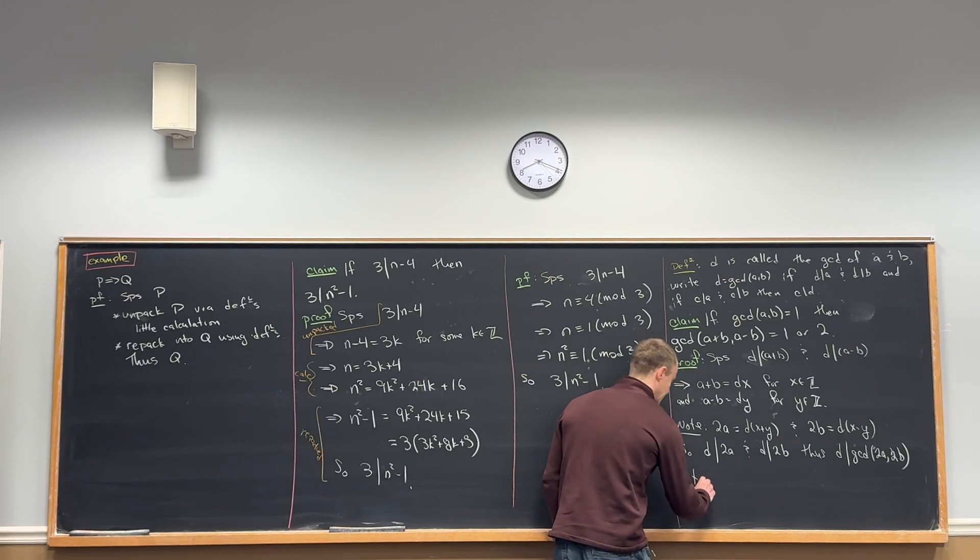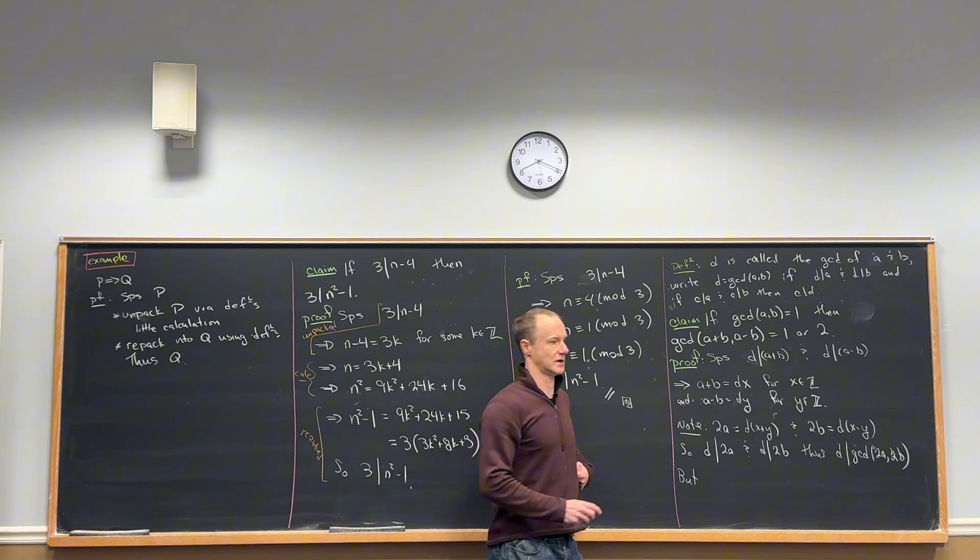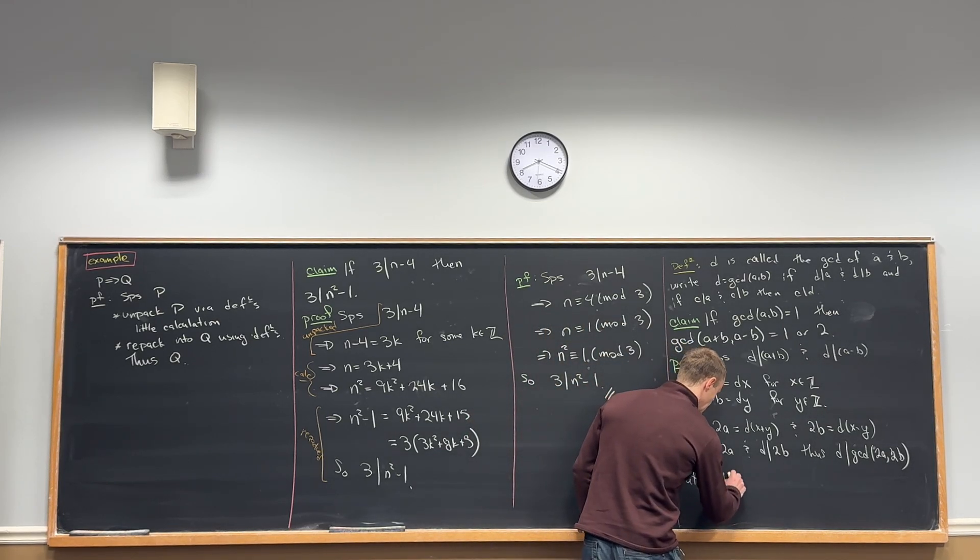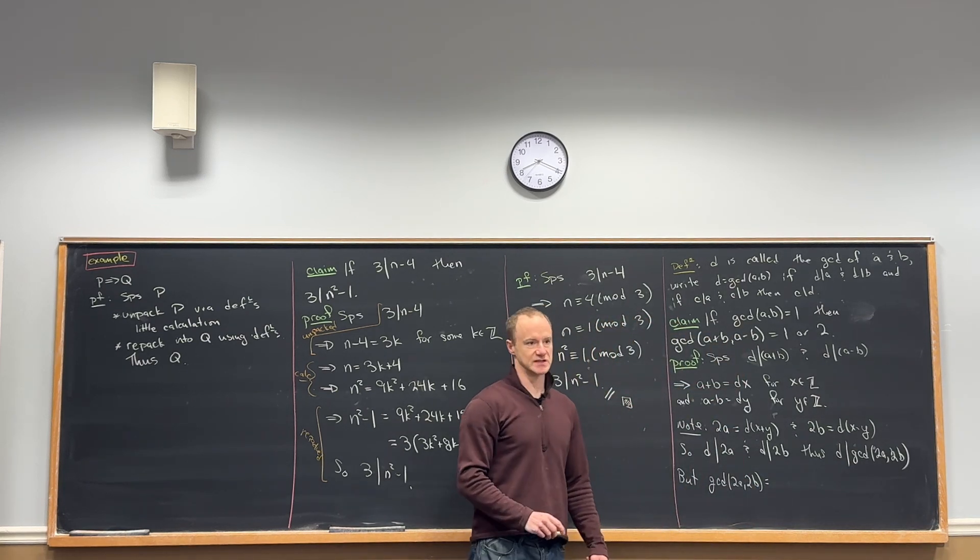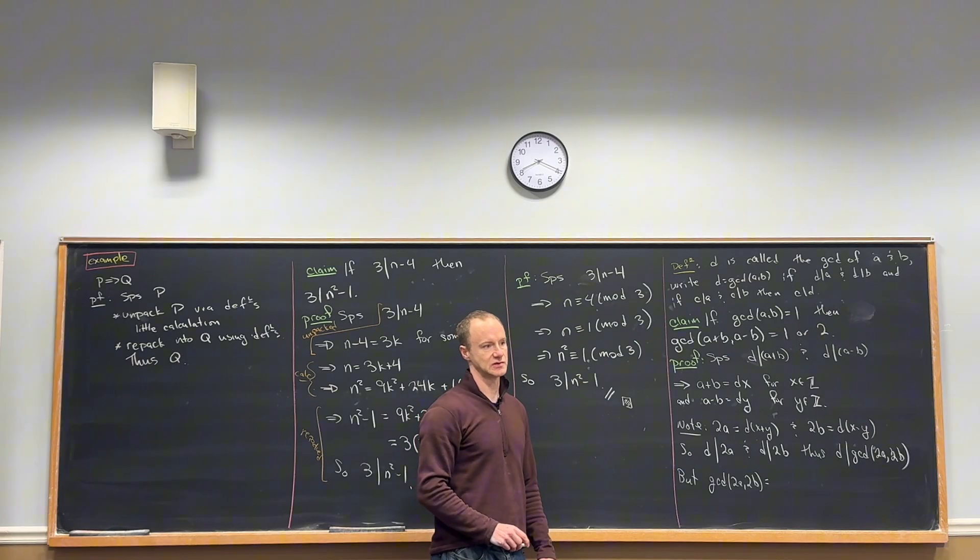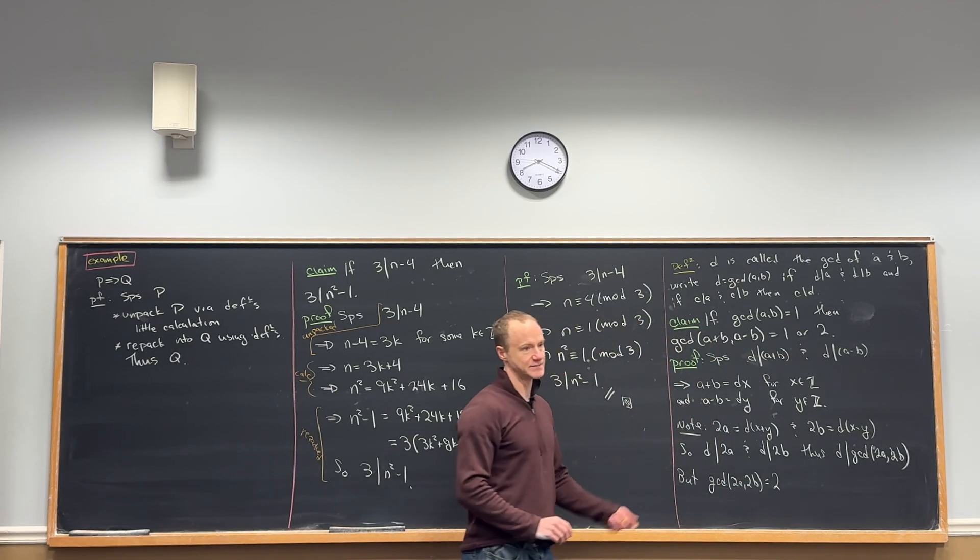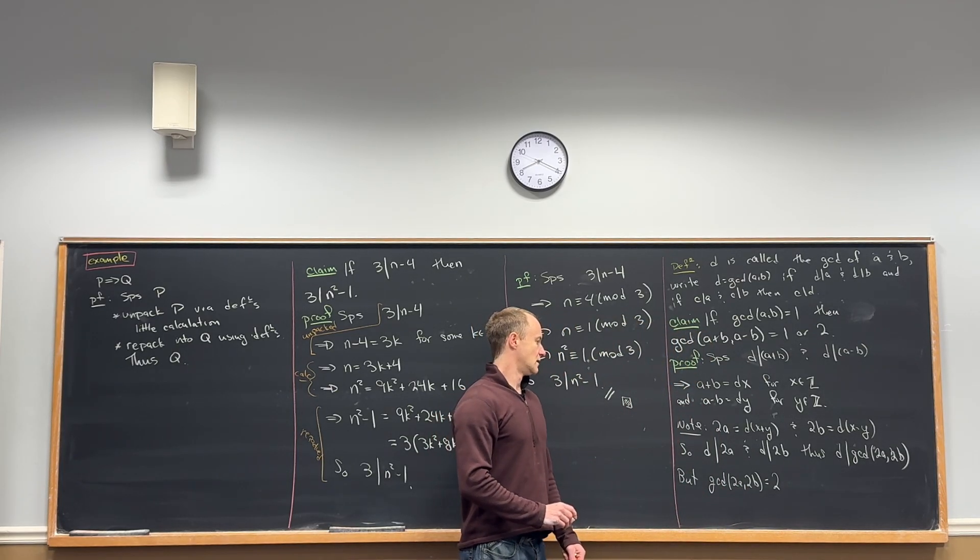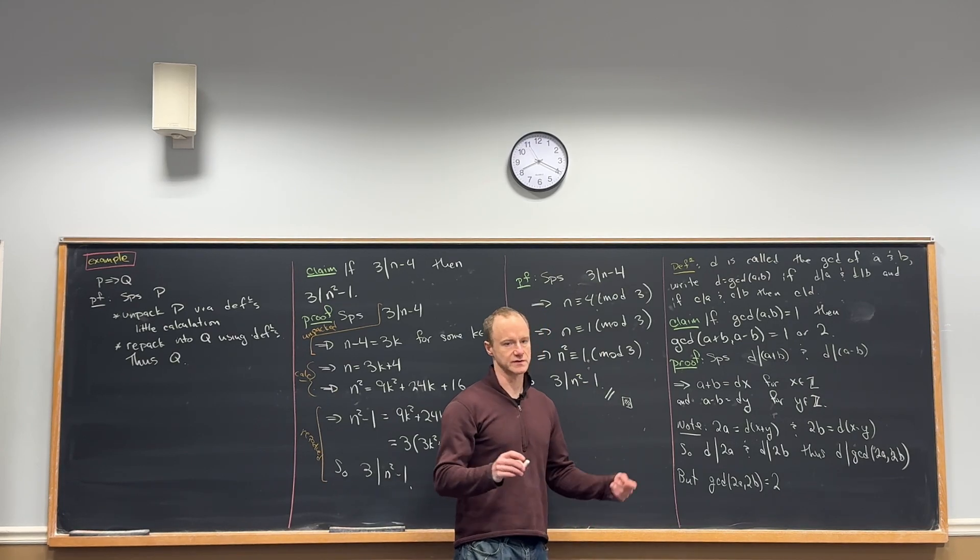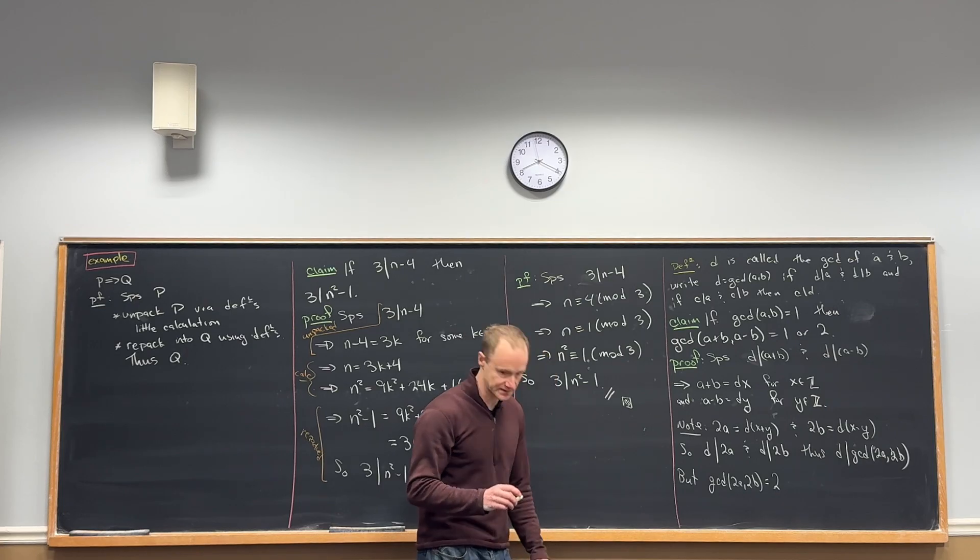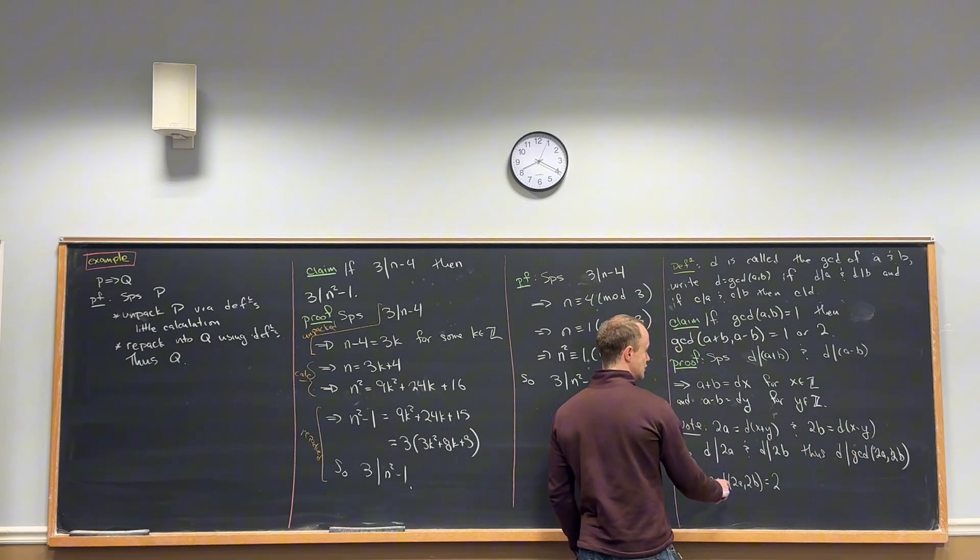I think maybe this could be a little exercise, but let's just take it for truth right now. But tell me what the GCD of 2A and 2B is, if the GCD of A and B is 1. What do we think the GCD of those are? Yeah, 2. Well, 2 divides both of them. But then you can divide 2 from both sides of the equation or whatever, and you'll see that 1 is the only thing that divides A and B. So the GCD of 2A and 2B is 2.